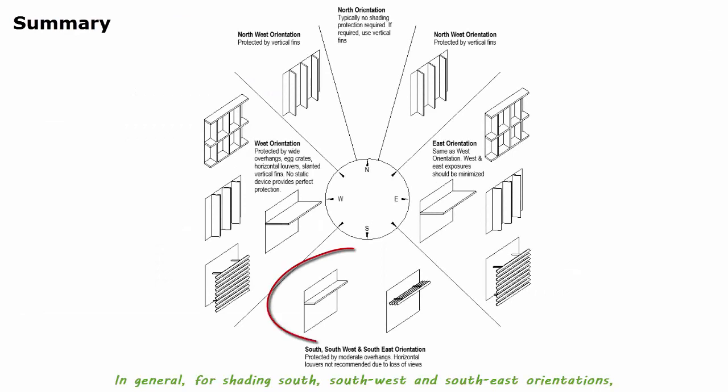In general, for shading south, southwest, southeast orientations, moderate horizontal overhangs can be very economical and effective.